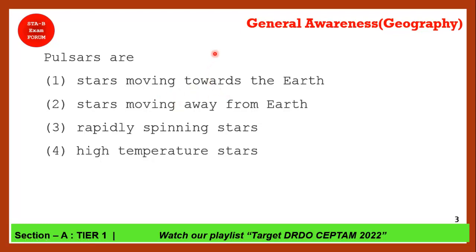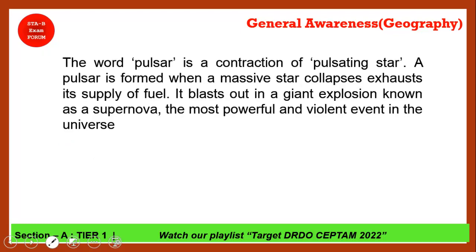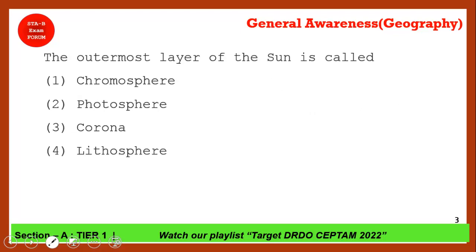What are pulsars? Pulsars are not a moving star — they are rapidly spinning stars. Option 3 is the correct answer. The word 'pulsar' is a contraction of 'pulsating star.' They are formed when a massive star collapses and there is a giant explosion called a supernova, which is the most violent event in the universe.